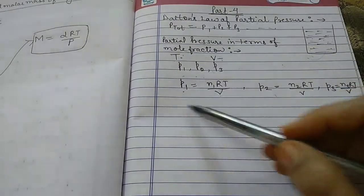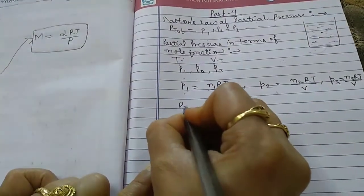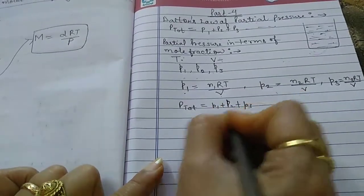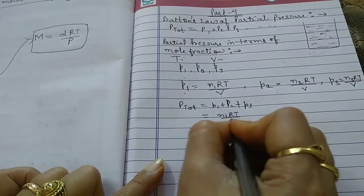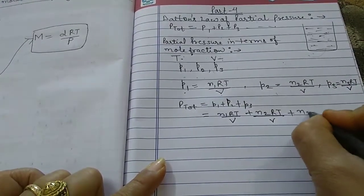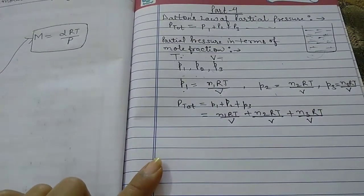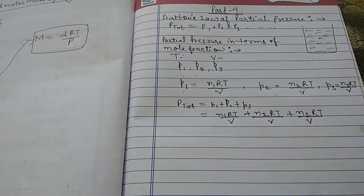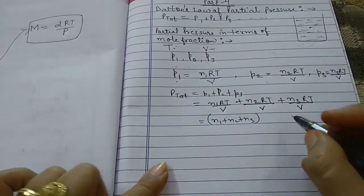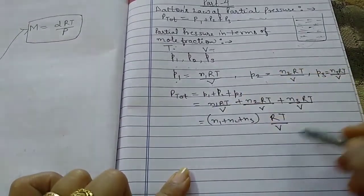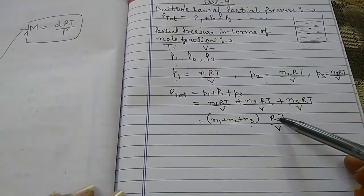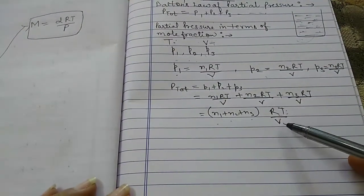For the total pressure P_total, we use the formula P_total equals P1 plus P2 plus P3, which gives us N1RT/V plus N2RT/V plus N3RT/V. Taking RT/V as common, P_total equals (N1 plus N2 plus N3) times RT divided by V, where R is the gas constant, T is the temperature, and V is the volume.